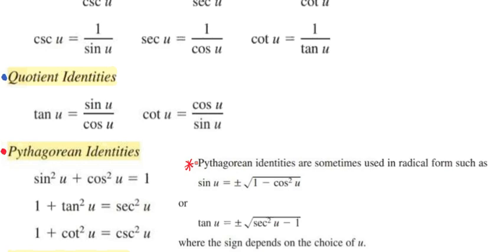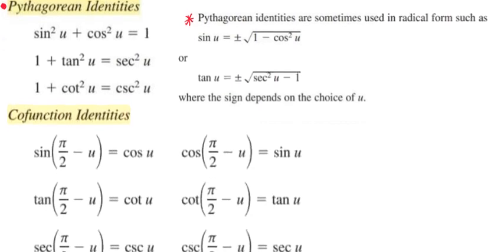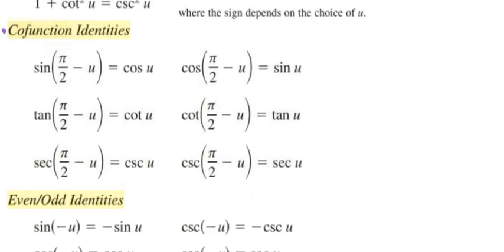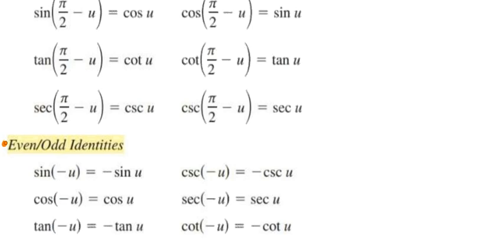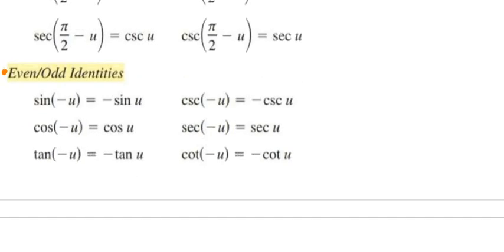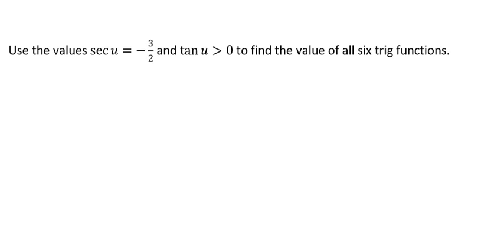The sign of sine depends on the choice of u. We also have the cofunction identities as well as our even and odd identities. We're going to use some of these identities to help us find all six trig functions.